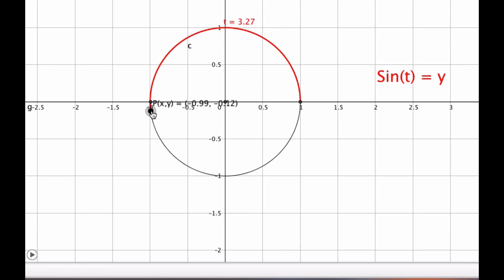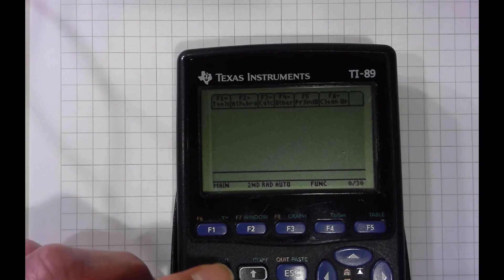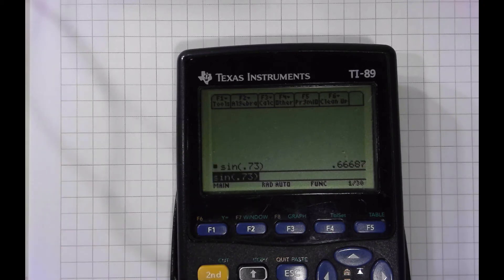The value of sine decreases here and becomes 0 again at t equal to π. And now in this quadrant, the sine function is taking on negative values. So, for example, at t equal to 0.73, we have the sine of t is 0.66. Let's confirm that with our calculator. So sine of 0.73 is equal to 0.66.